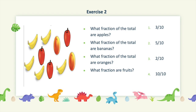The next question is asking: what's the fraction of bananas? Our numerator would be 5, while the denominator would be the total amount of fruits, which is 10. Hence, our fraction would be 5 out of 10. The third question asks: what's the fraction of oranges? Our numerator would be 2, which is the total amount of oranges, while the denominator is 10, which is the total number of fruits. Hence, our fraction would be 2 out of 10.